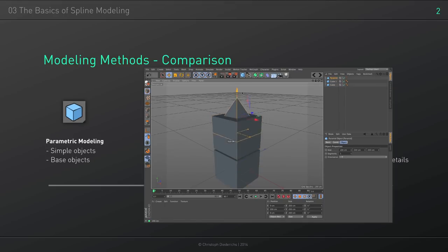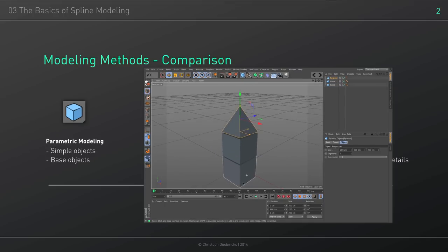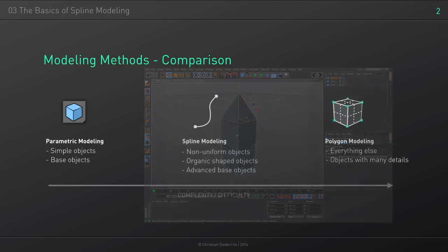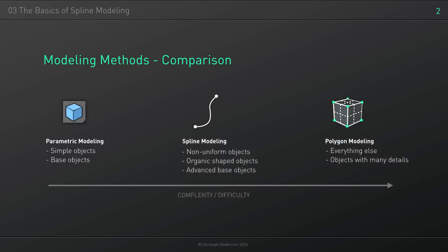By just using those parametric objects we really can't build any complex objects — it's like trying to build something really complex in detail with just some toy blocks or Lego bricks. So we have to use some other techniques and tools to create non-uniform or organic shaped objects, or anything more complex than just the basic objects we have.